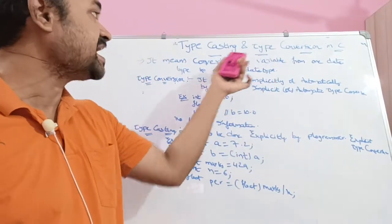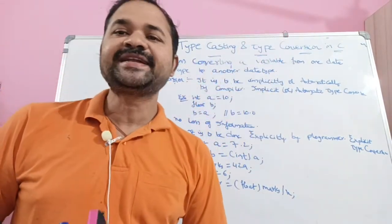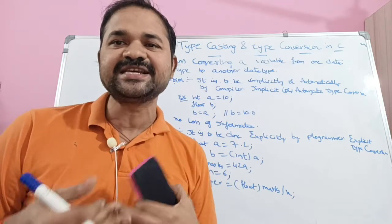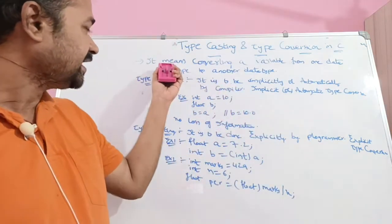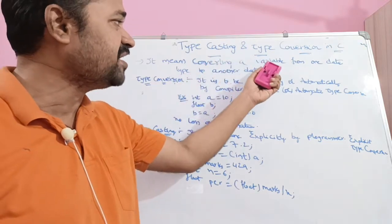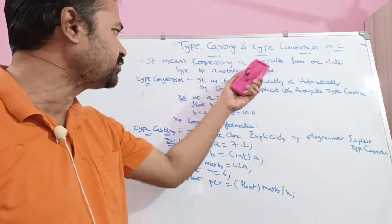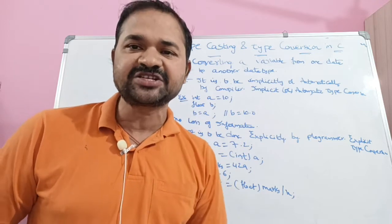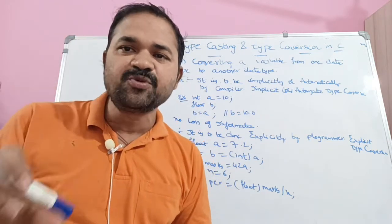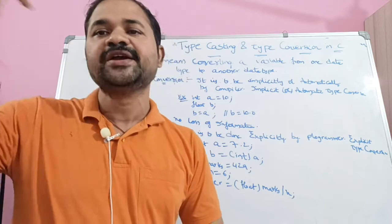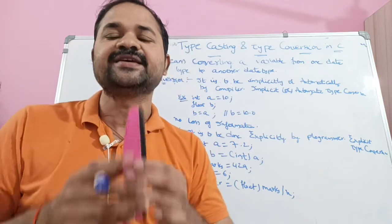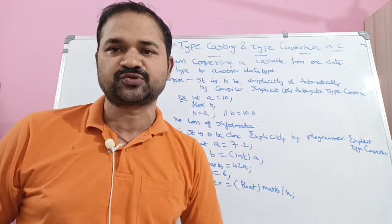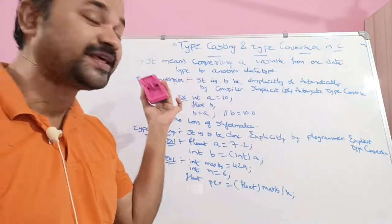Let's talk about typecasting and type conversion. First, let's see what typecasting and type conversion is. It means converting a variable from one data type to another data type. So, typecasting and type conversion means if you have a variable, you can convert it from one data type to another data type. First, let's see about what type conversion is.